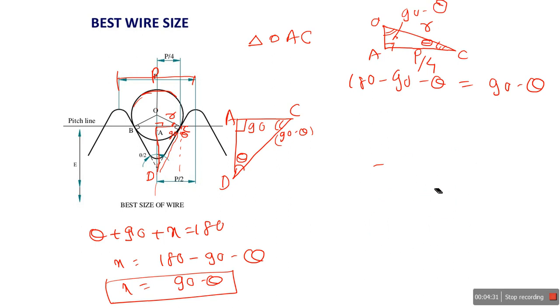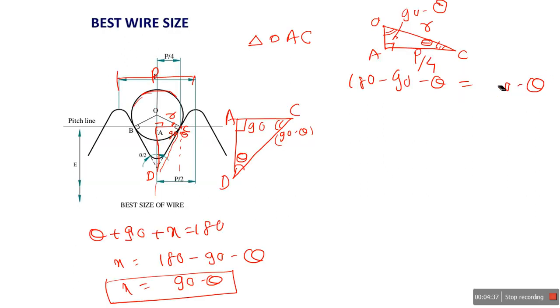Now you find out this angle theta. Now you can easily find out angle O. The total angle is again 180, so 180 minus this angle 90 minus this angle theta. So this angle again is 90 minus theta.